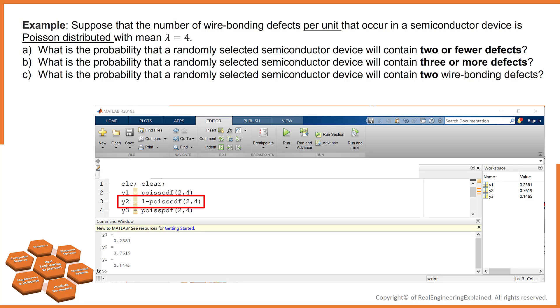The question C is what is the probability that a randomly selected semiconductor device will contain two wire bonding defects? To answer this question, we can use probability distribution function. The answer is 14.6%.